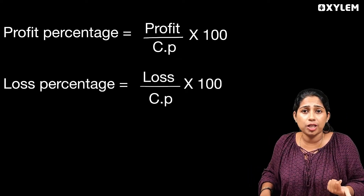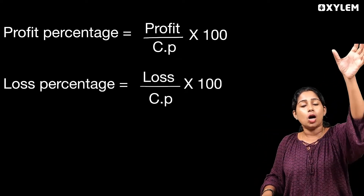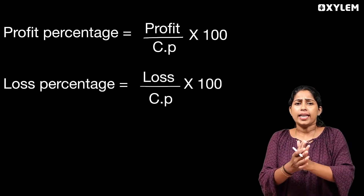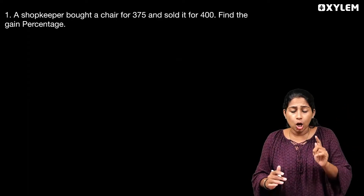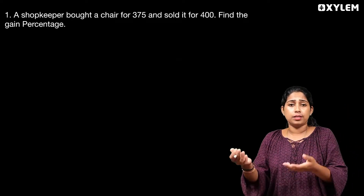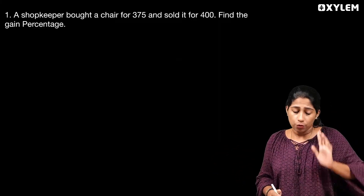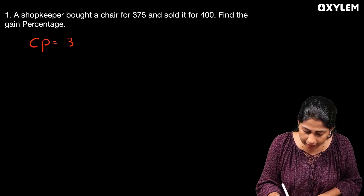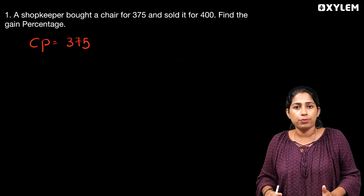The equation is: profit divided by cost price into 100, and loss divided by cost price into 100. Now we have a question: A shopkeeper bought a chair for 375 rupees and sold it for 400 rupees.